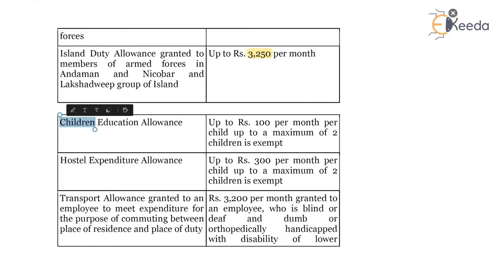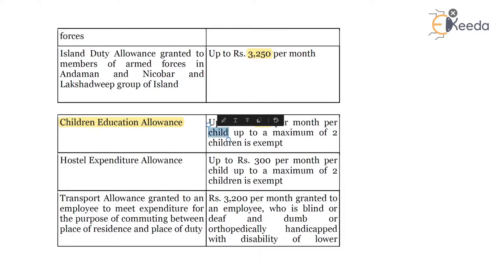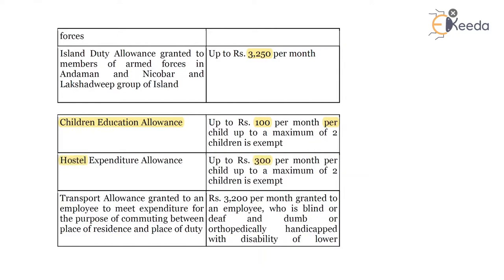The next set of allowances you may encounter frequently and which also have practical relevance: children education allowance — up to 100 per month per child, up to a maximum of two children, is exempt. The limit of 100 per month is per child and only two children are allowed for the purpose of exemption. Hostel expenditure allowance: the limit is 300 per month per child, maximum up to two children.